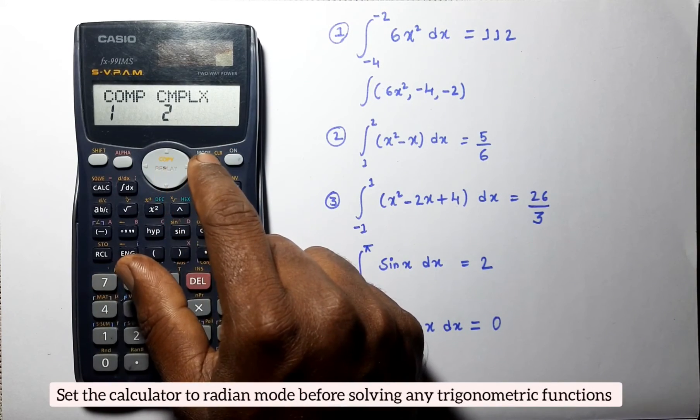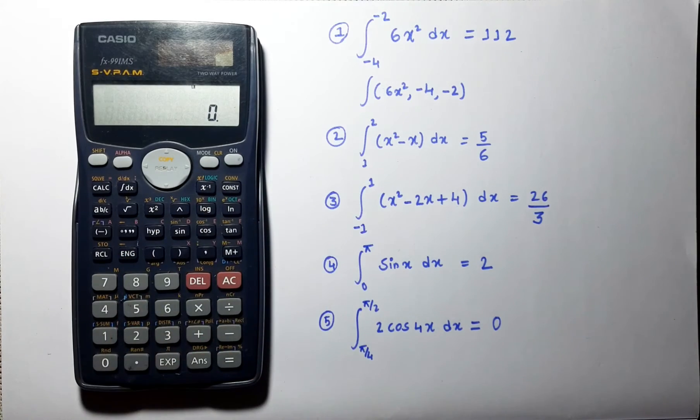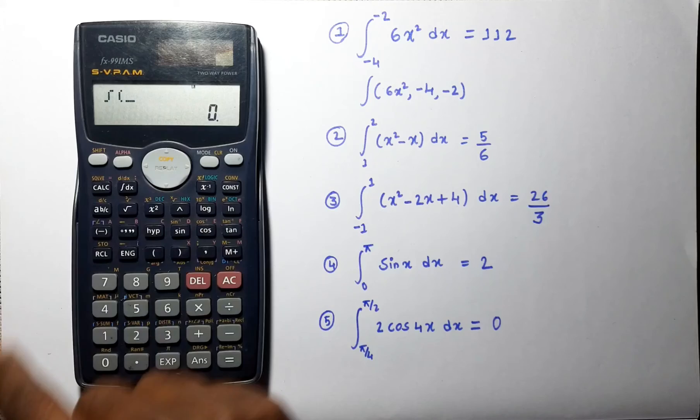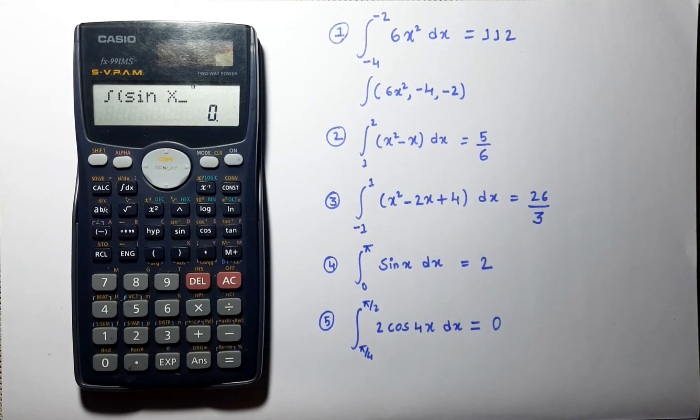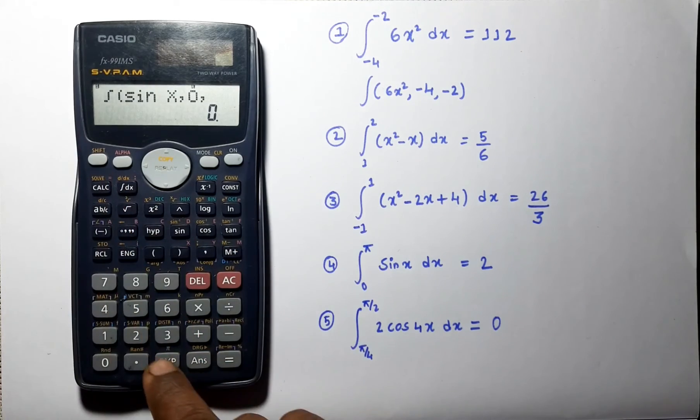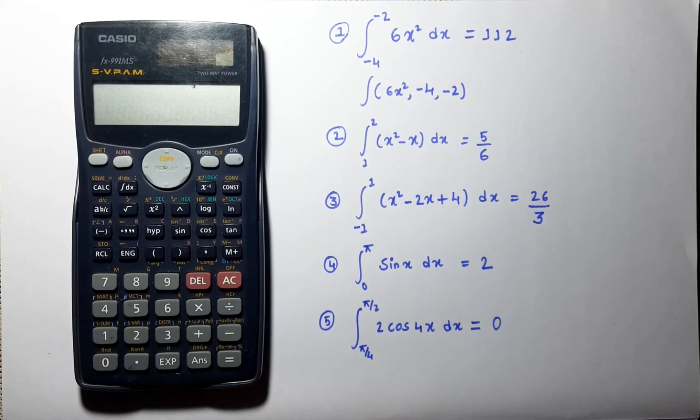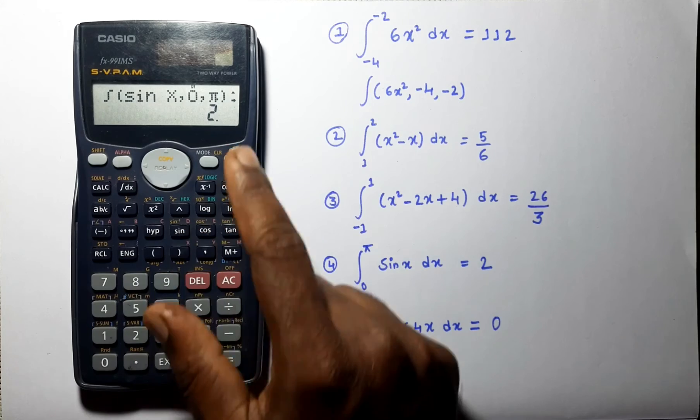Now, before solving any trigonometric functions, we have to set our calculator in radian mode. Go to mode and set the calculator into radian mode. And let us solve this problem. Integral of sin x, limit varies from 0 to pi. And we can see this answer. This is 2.